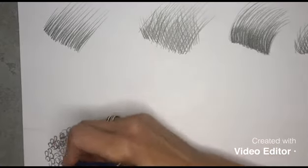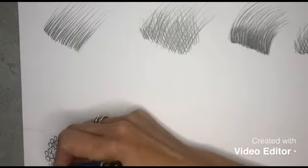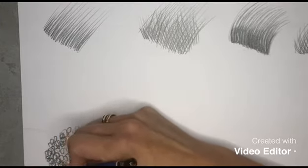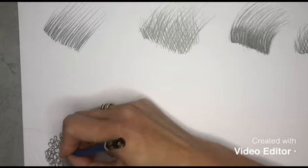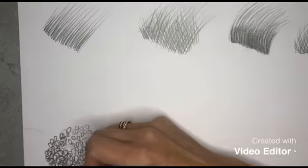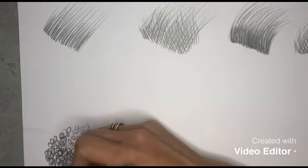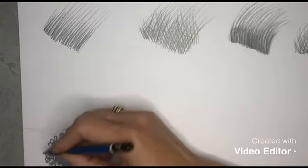This part is going to be like really light pressure, like that. And when I come down here, I'm going to have my values darker, so I'm going to press a little harder and make my circles a little bit closer to each other, so I create a darker value than the ones that are up here.